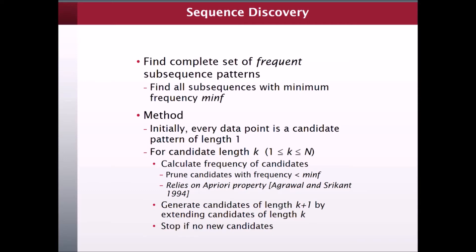The nice thing about this particular algorithm is that it does rely on this a priori property, or the downward closure property. This means that instead of going back to the original data set and considering all candidates of length k plus one — which would be computationally a very lengthy process — we can simply consider all of the candidates that were sufficiently frequent of length k and extend all of the instances that surround those occurrences of the pattern in order to find our candidates of length k plus one, which requires much less computation time and effort. Our stopping criteria will be to not repeat this process if there are no new candidates that occur.